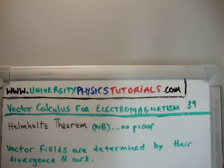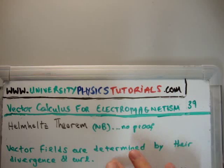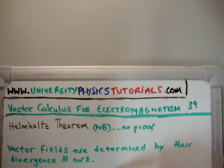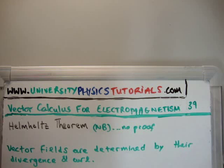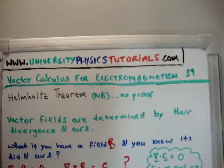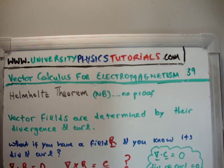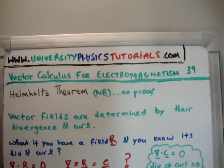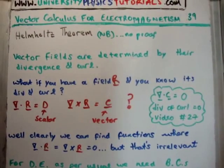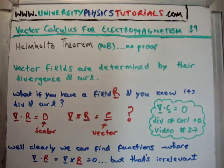We know that a vector field is determined by its divergence and its curl. The question posed by the Helmholtz theorem is: by what amount is your vector field determined by its curl and divergence? If you have a field and you know both its divergence and curl, what do you actually know about that field?